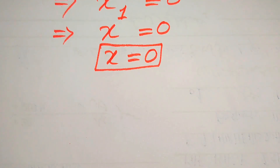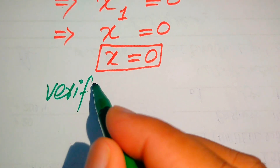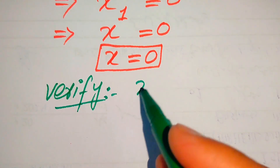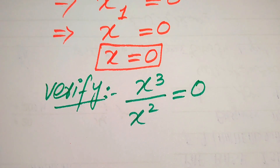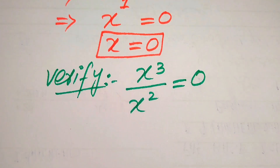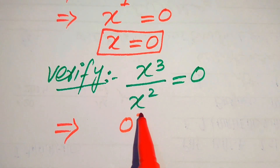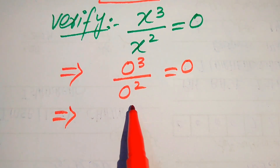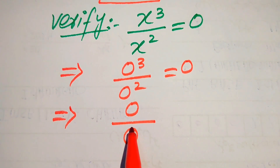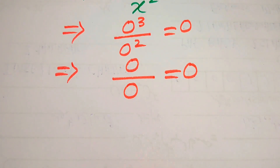Now we check whether this root is a solution or an extraneous root. For verification, we copy down the given equation: x cubed divided by x squared equals 0. We substitute x equals 0 into the left-hand side, giving us 0 cubed divided by 0 squared equals 0. We know 0 cubed equals 0 and 0 squared equals 0, so the left-hand side becomes 0 divided by 0.